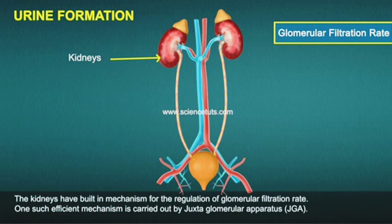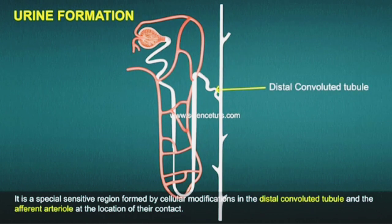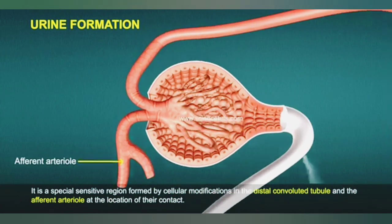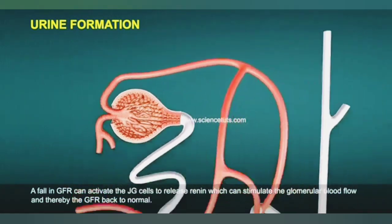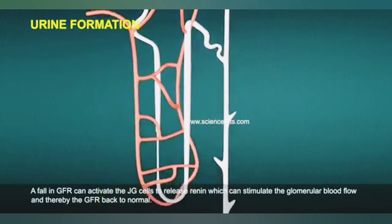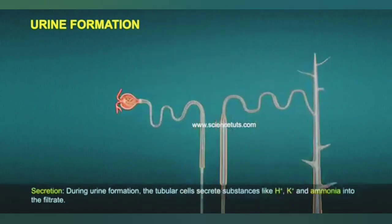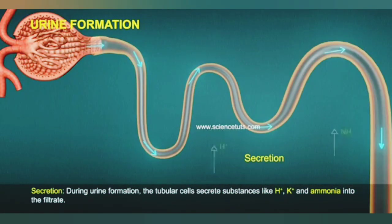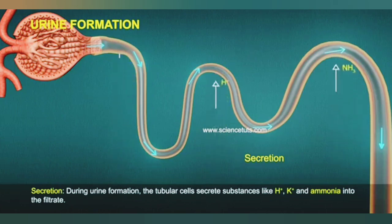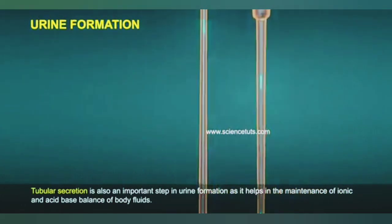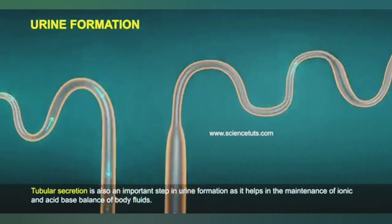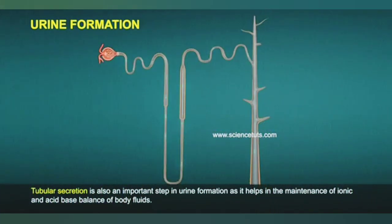One efficient mechanism is carried out by the juxtaglomerular apparatus, a special sensitive region formed by cellular modifications in the distal convoluted tubule and the efferent arteriole at the point of their contact. A fall in GFR can activate the juxtaglomerular cells to release renin, which stimulates glomerular blood flow and thereby restores GFR to normal. During urine formation, tubular cells secrete substances like H⁺, K⁺, and ammonia into the filtrate. Tubular secretion helps in the maintenance of ionic and acid-base balance of body fluids.